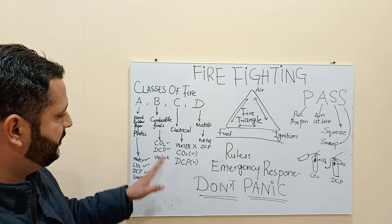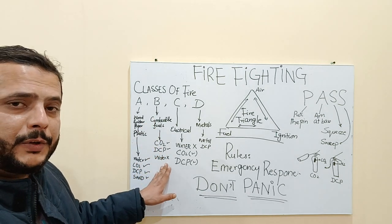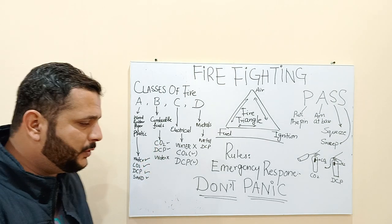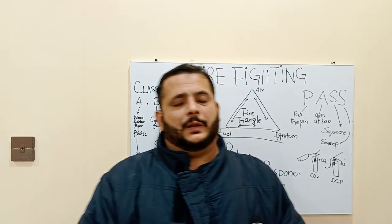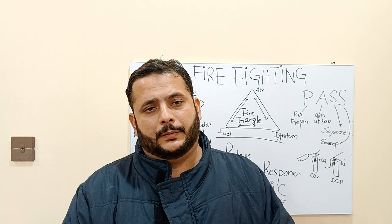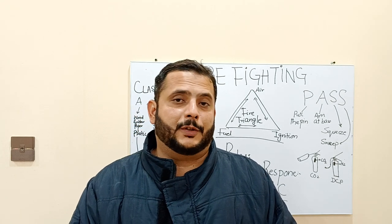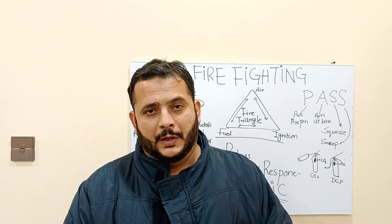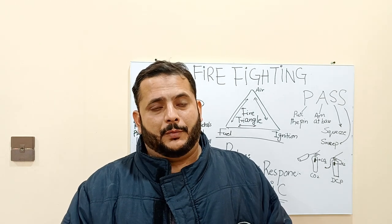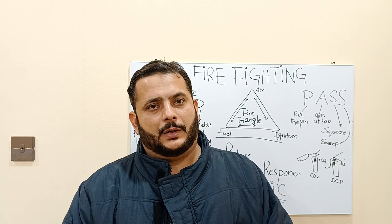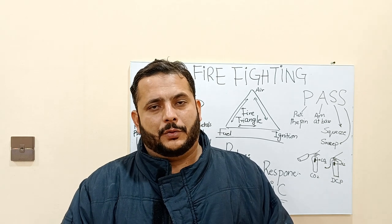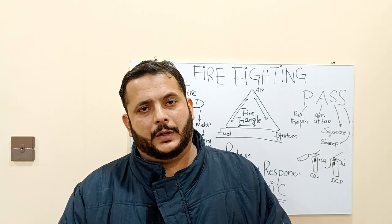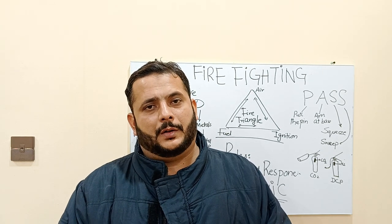For Class B combustible fire, water cannot be used — DCP and CO2 are used instead. Why cannot water be used? Because when you throw water on a fire resulting from combustible fuel or gas, this fire has a temperature of more than 1000 degrees centigrade. When you throw water on it, it becomes steam, and steam is much more dangerous than ordinary water, leading to further injury to the personnel.